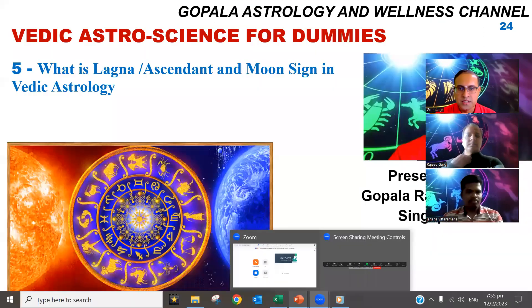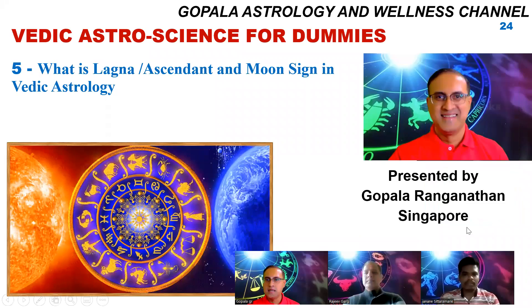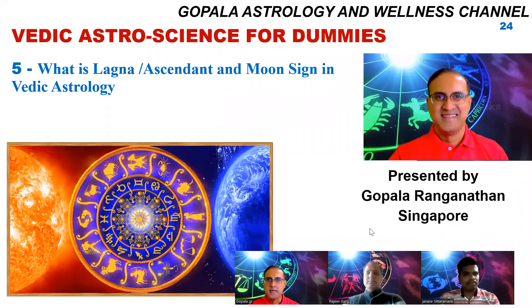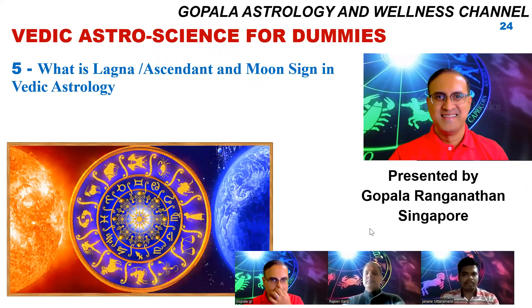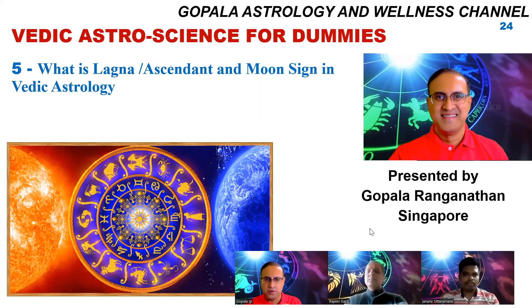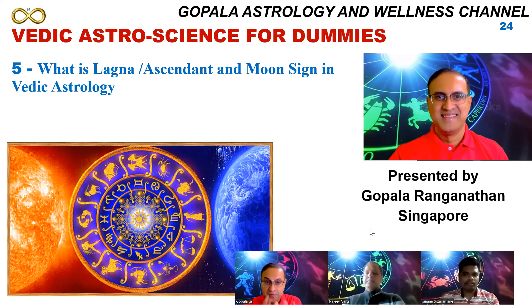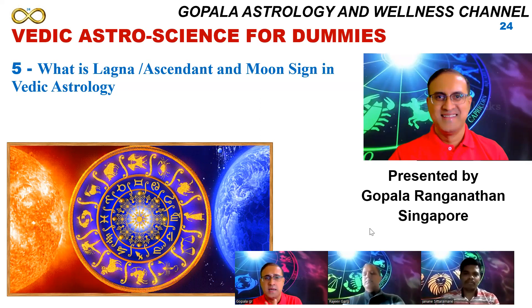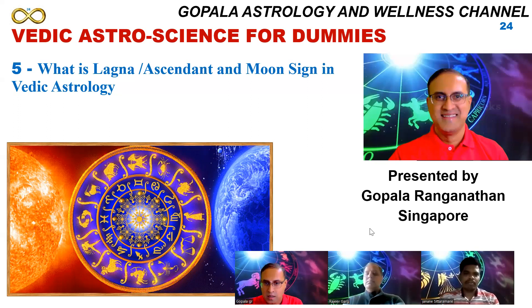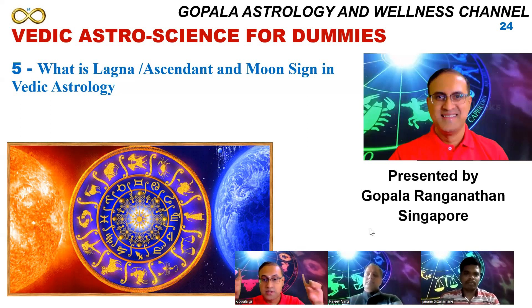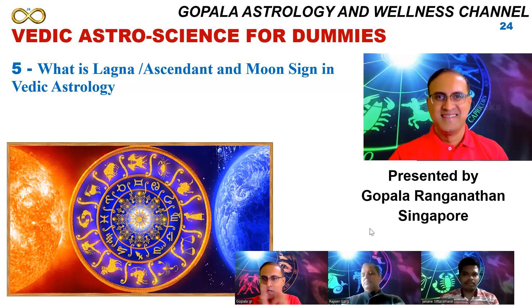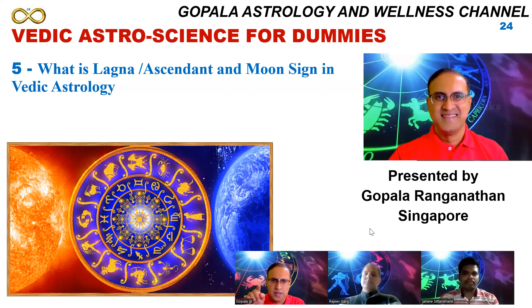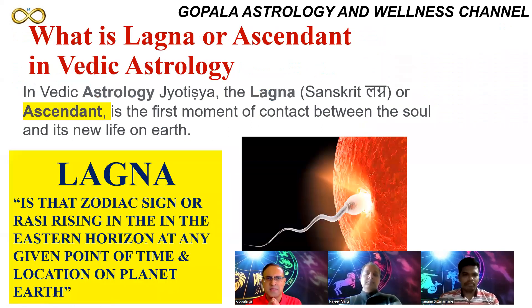Without wasting time, the host started the screen sharing presentation. The topic is: what is ascendant or lagna? Many videos exist on YouTube, but the goal today is to throw some scientific information on lagna itself. We have seen so many charts involving navagrahas and scientific astrology involving 16 body systems. The key question is: where is planet Earth in our chart — is there a role to put Earth in our chart?